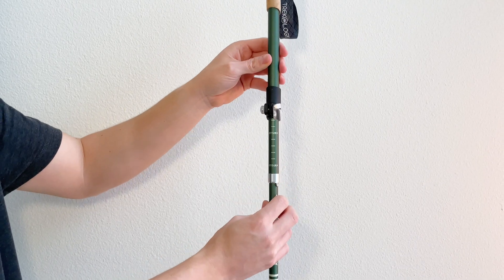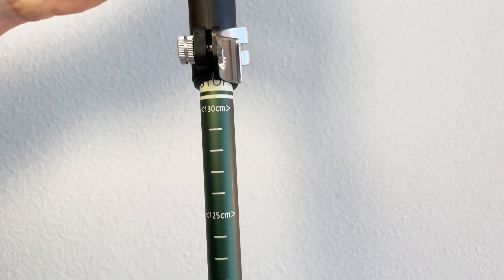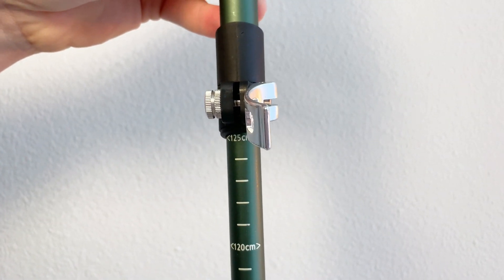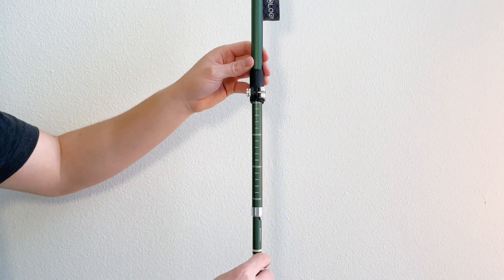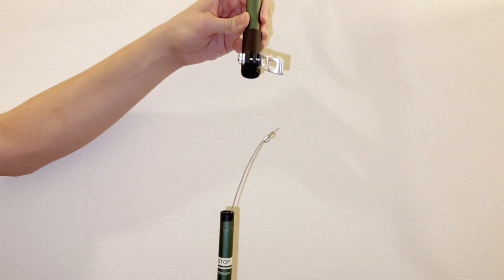These poles offer adjustable heights ranging from 43.5 inches to 52 inches, accommodating individuals from 5'2" to 6'5". Be cautious to not exceed the stop sign when adjusting the height.